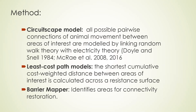We used different methods to achieve our goals. One is what we call all-possible pairwise connection of animal movement, which is a circuit-theoretic model that mimics electricity theory — the movement of electricity within a circuit. We also used least cost path models, which calculate the shortest cumulative cost-weighted distance between areas of interest calculated against a resistance surface. We then used the barrier mapper to identify areas that need to be restored — either connecting key areas or forming part of connectivity corridors for wildlife.